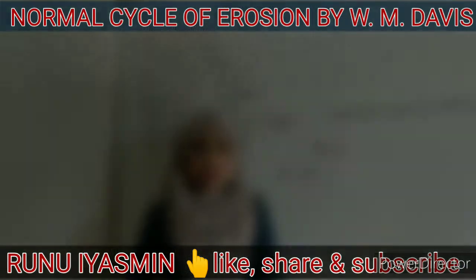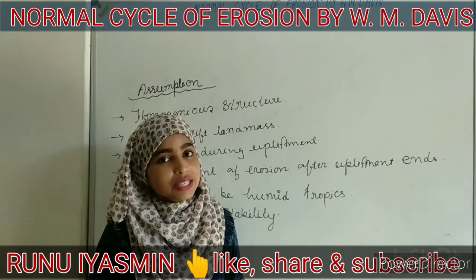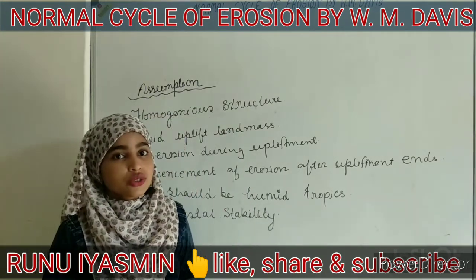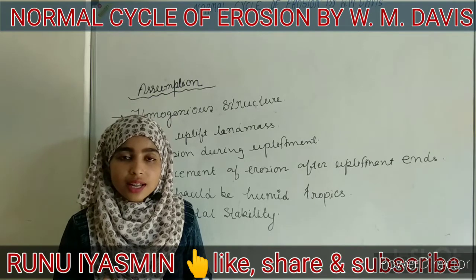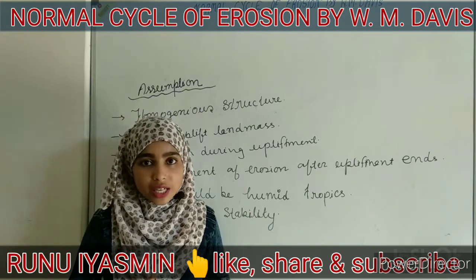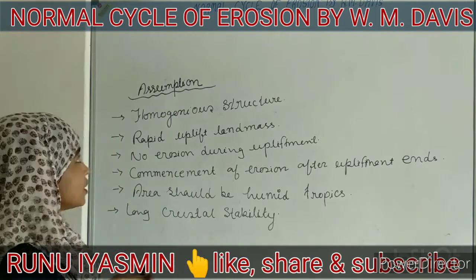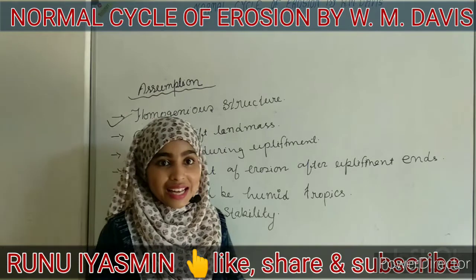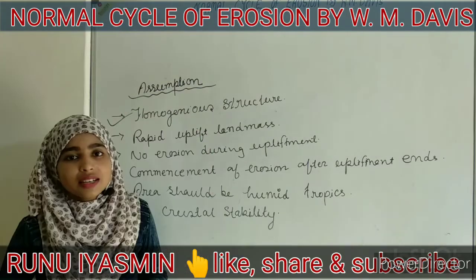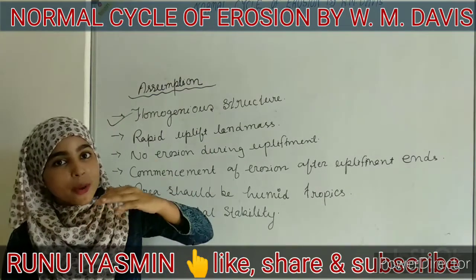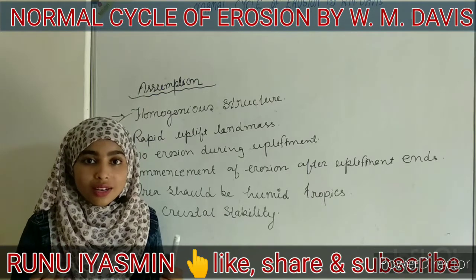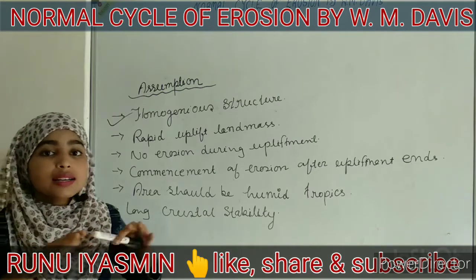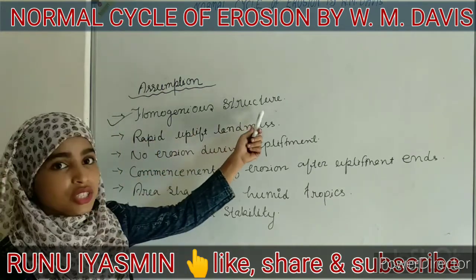Now let me tell you the assumptions given by William Morris Davis before he postulated this theory. He gave some assumptions about what type of area would be involved. First is homogeneous structure — meaning the dip direction, the inclination of rock beds, the porosity, water holding capacity, texture, and structure of those rock beds are all the same. That is known as the homogeneous structure.